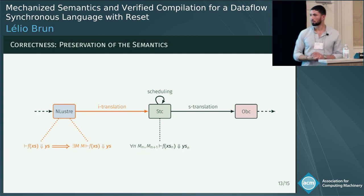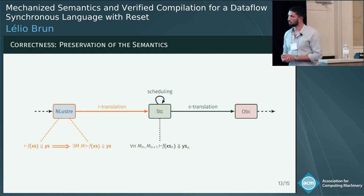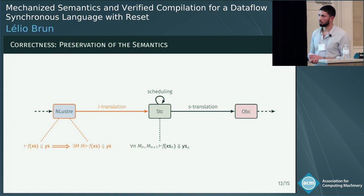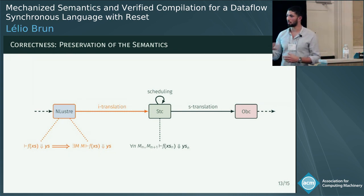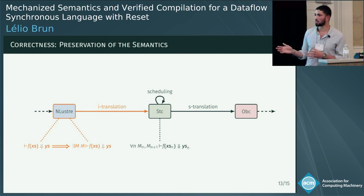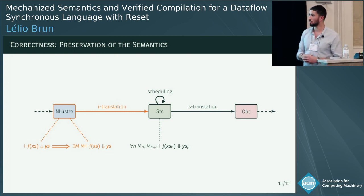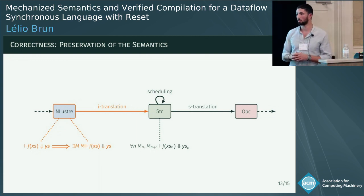Are there tools for users to prove properties of their source programs in Lustre, and are those tools proved sound? That is one goal of the VELUS project: to have a way to represent a Lustre program in our framework, prove some properties on it, and show they are preserved. For now, there exist model-checking tools for Lustre, but this is two separate worlds relative to our work.